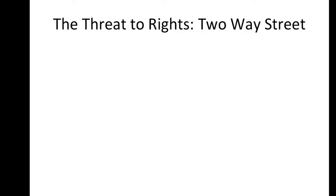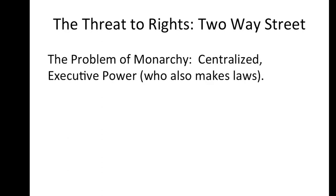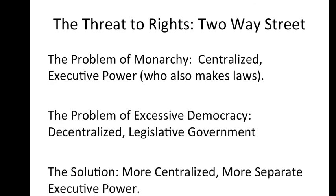The founders learned during the critical period that rights can be threatened in a variety of ways. The threat to rights from an all-powerful monarchy was obvious for all Americans to see. But rights could also be threatened from a government unable to keep the peace or gain respect from other countries, or from a government that does stupid things or undermines the stability necessary for one's property, and hence one's liberty to operate effectively. These problems — weak government and stupid government — would be America's problems.